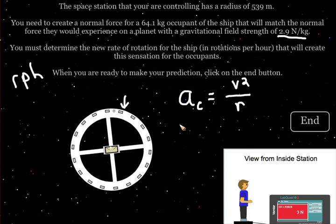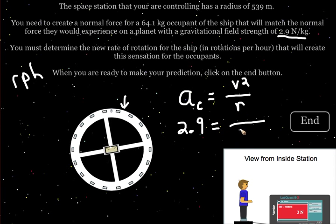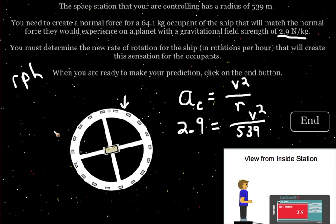We know we want to create an acceleration in this case of 2.9, and we know the size of the station is 539 meters for the radius. So we can solve for the speed that the station edges need to be traveling.